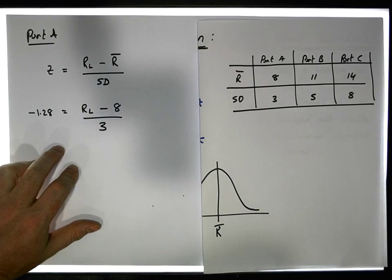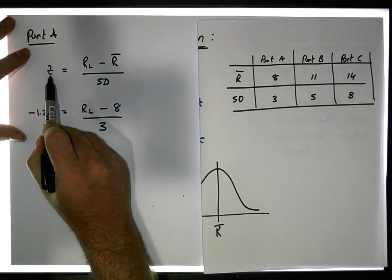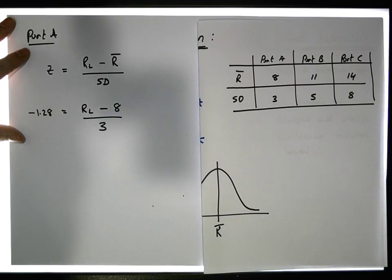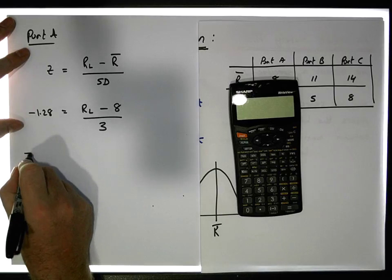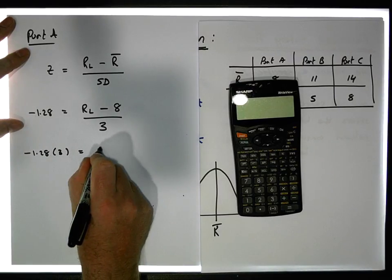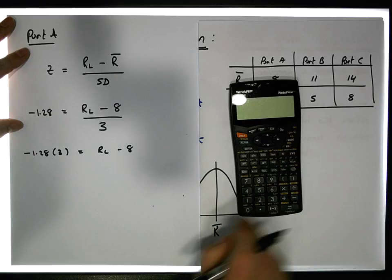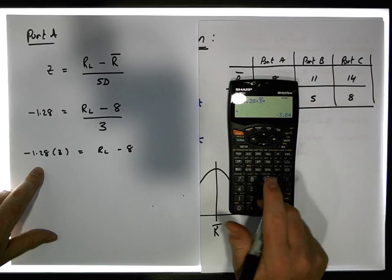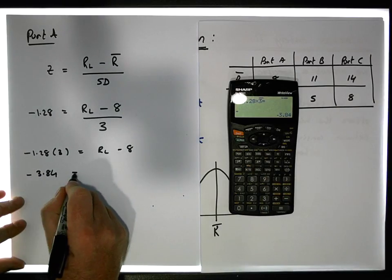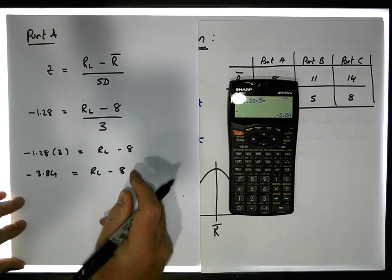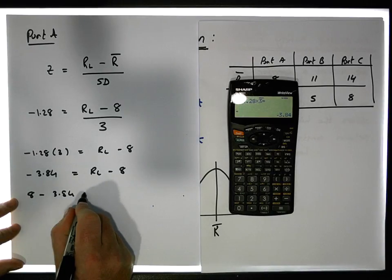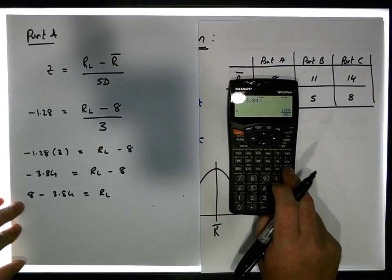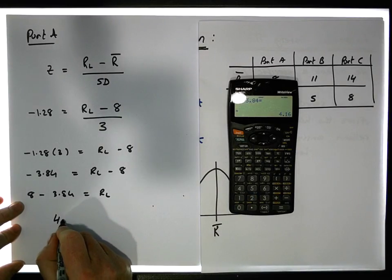In this case we need to find RL. Multiplying across by 3 gives us minus 1.28 times 3 equals RL minus 8. That gives us minus 3.84 equals RL minus 8. Bringing the 8 across, we get 8 minus 3.84, which gives us a value of 4.16.